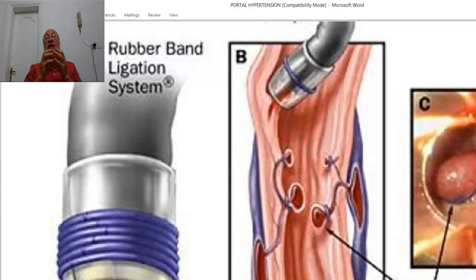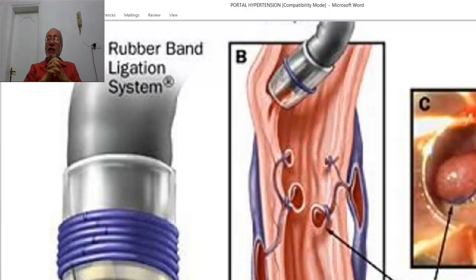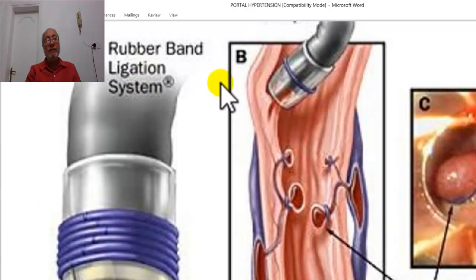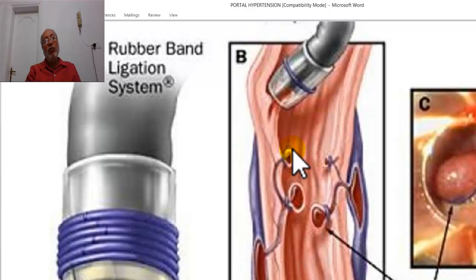If the varices are large silent varices — Grade 3 or impending rupture Grade 4 — the patient is liable for bleeding at any time. Grade 3 or Grade 4 silent varices will be converted to active varices. Therefore, it is recommended to prevent bleeding by prophylactic banding. Prophylactic banding of any large varices — a technique that will be discussed in detail later.